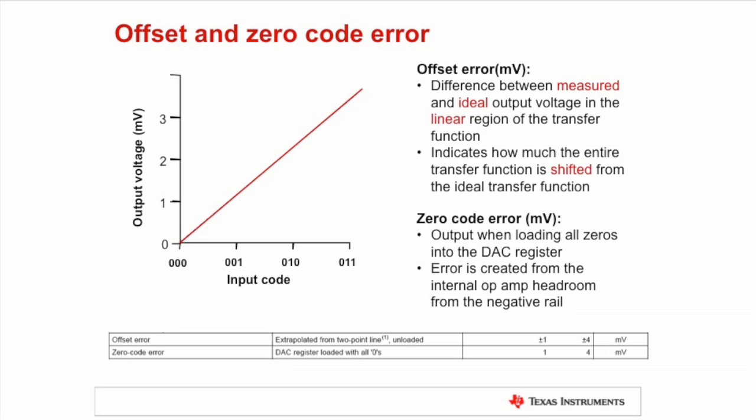Offset Error and Zero Code Error are two very similar specifications for a DAC that can be easily confused. Offset Error describes an offset or a shift in the entire transfer function across the linear region of operation. Think of it as the b term in y equals mx plus b.